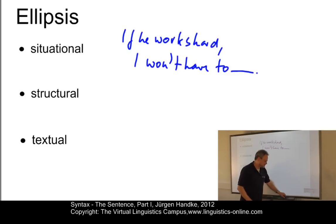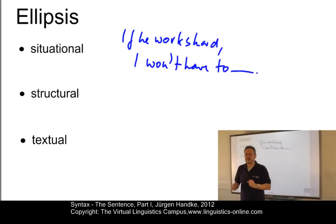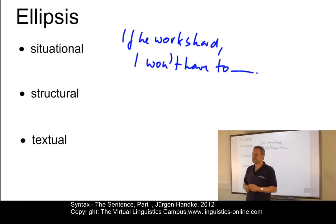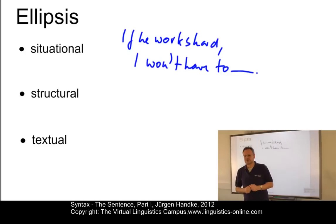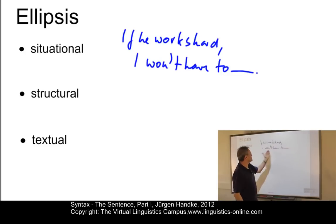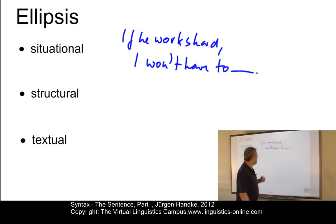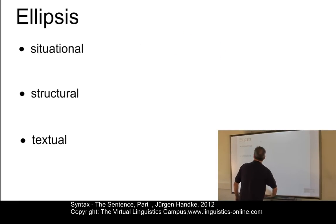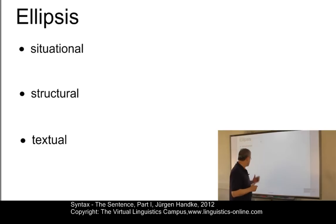Especially important in ellipsis is the principle of verbatim recoverability — that is, the actual words that are missing must be implicitly understood and thus recoverable. Strict ellipsis requires that when the missing words are inserted, the meaning doesn't change: "If he works hard, I won't have to work hard" — the meaning is exactly the same. Depending on the type of recoverability, we have several types of ellipsis: situational ellipsis, structural ellipsis, and textual ellipsis.